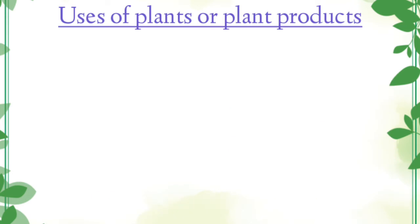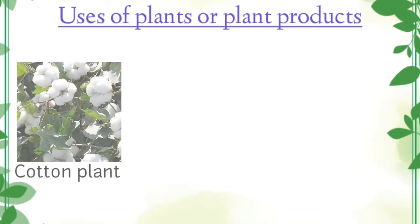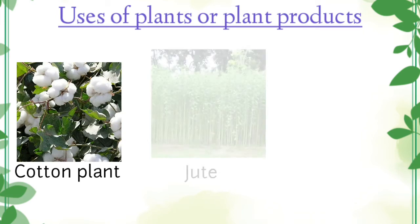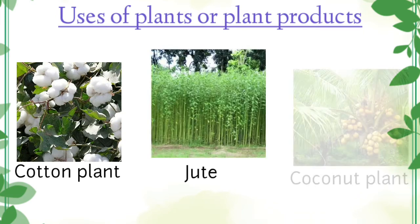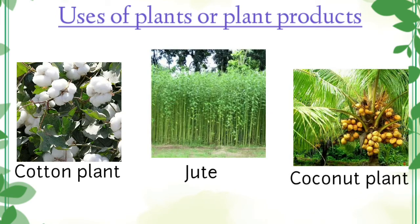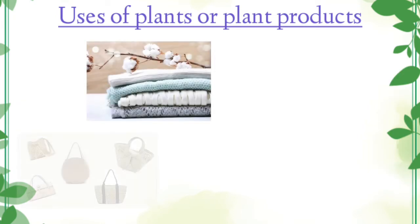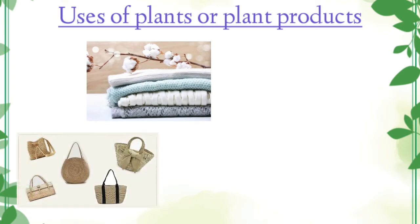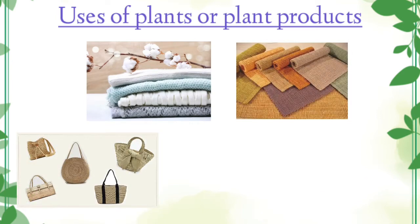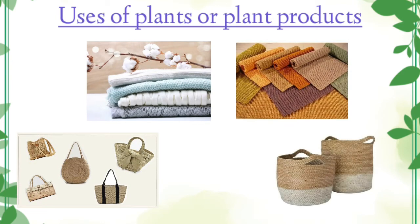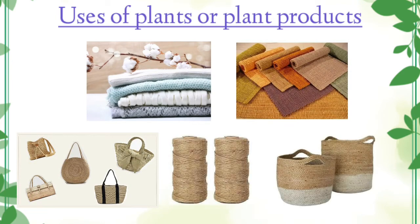Plants such as cotton plant, jute, and coconut plant give us fibers to make clothes, bags, carpet, basket, rope, etc.